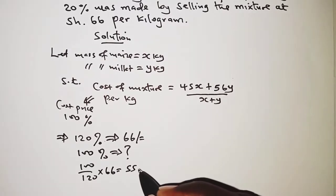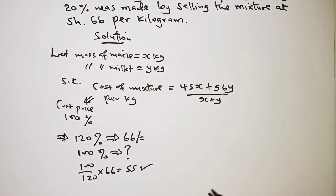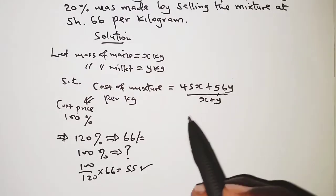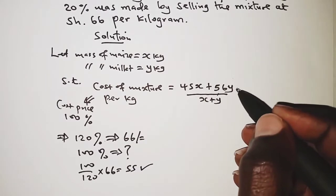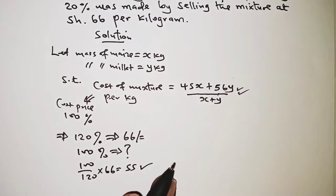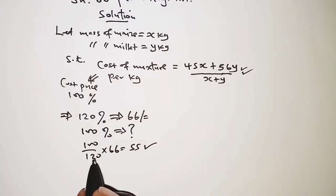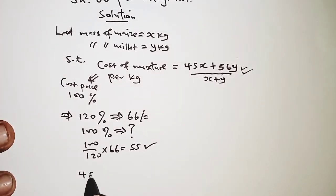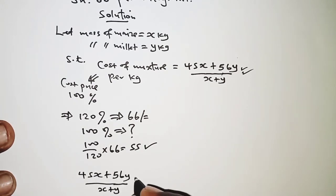Now once we've gotten the cost of the mixture per kilogram, we'll have to equate it to this expression. So we have 45x plus 56y all over x plus y is equal to 55.